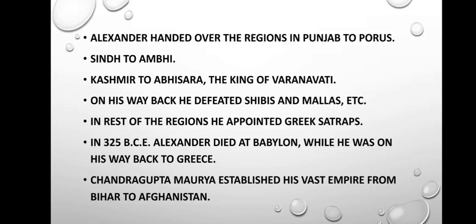Before returning, Alexander handed over the region of Punjab to Porus and that of Sindh to Ambhi. He handed over the kingdom of Kashmir to Abhisara, the king of Varanavati. On his way back he defeated the Shibis and Malavas. In the rest of the region he appointed Greek satraps as governors. In 325 BCE, Alexander died at Babylon while on his way back to Greece. Alexander's invasion of India did not have far-reaching impact on the political scenario; in a very short period after his death, Chandragupta Maurya established his vast empire from Bihar to Afghanistan.